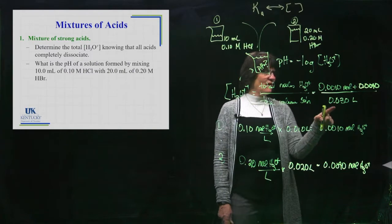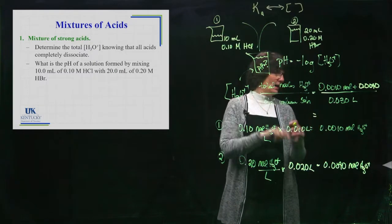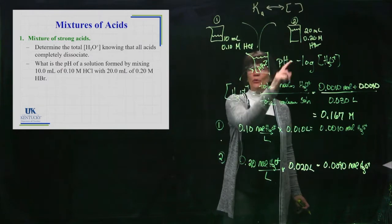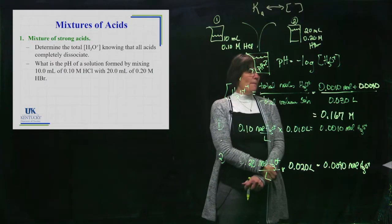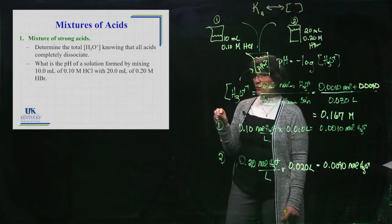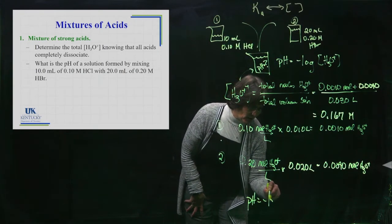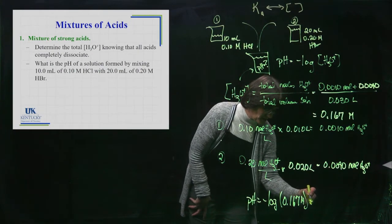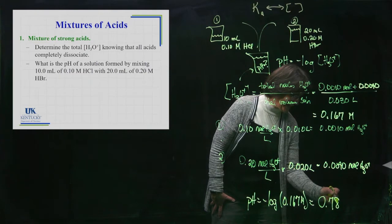I add those two numbers together and divide by 0.03 and that would be the total H3O plus concentration in my combined beaker. That gives me 0.167. It's somewhere between 0.1 and 0.2, that makes sense. It's closer to 0.2 because there's more of it. That's my H3O plus concentration. What did they want to know in this problem? It says, what is the pH of the solution?